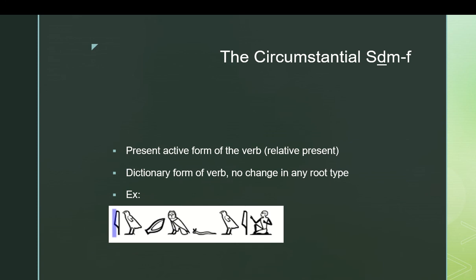The most basic form is the circumstantial sdjm-f. So our paradigm verb is sdjm. You would affix a suffix pronoun as the subject. F, so you get sdjm-f. It is the present active form of the verb, the relative present. It's the dictionary form of the verb, no change in any root type. And here is a very basic sentence. Iw sdjm-f wi, which is just he hears me, where wi is our direct object, which requires a dependent pronoun, and sdjm-f is our verb, and then we have iw.